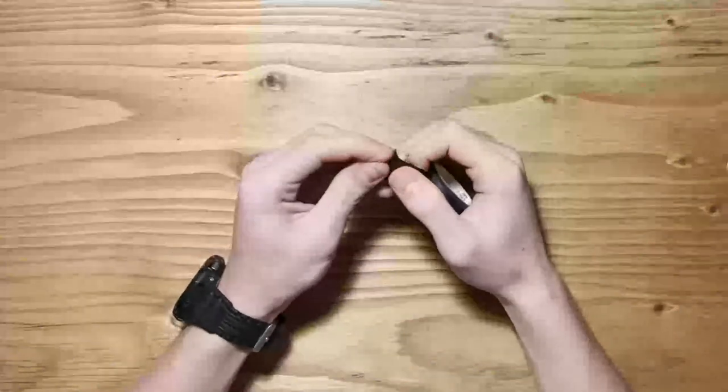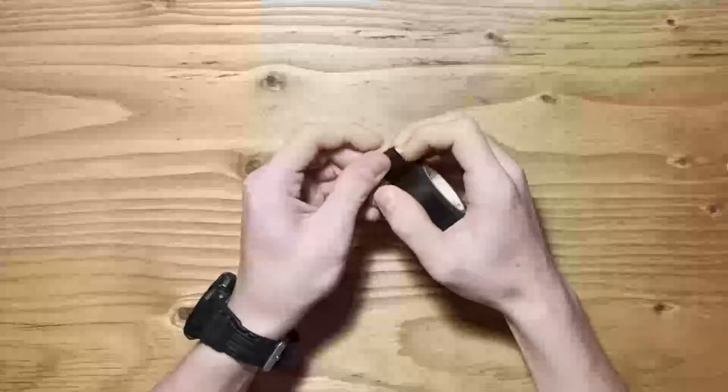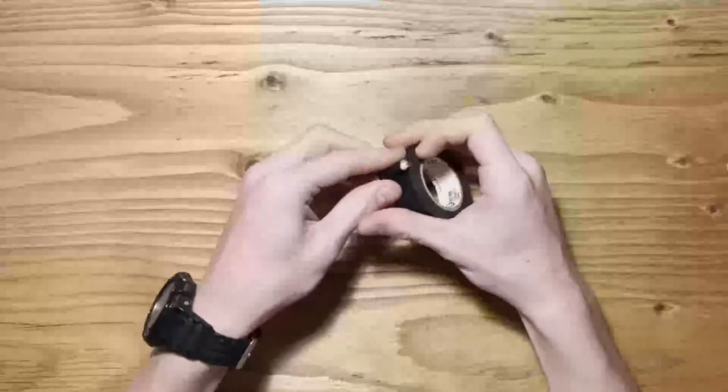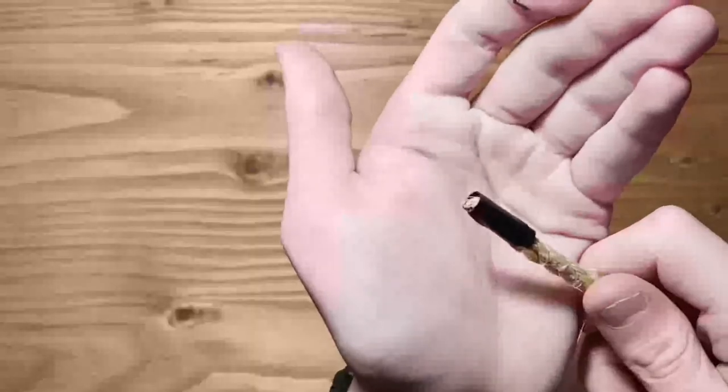Then, simply take your electrical tape and wrap it around the end. I recommend three or four wraps to ensure that it won't unravel. Once done, your rope will not unravel.